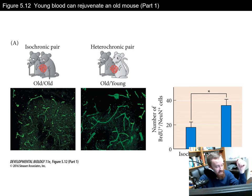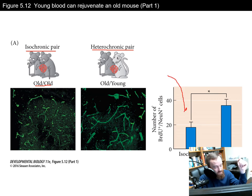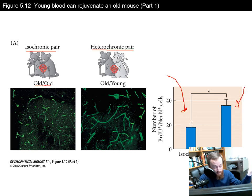In this experiment, they picked an isochronic pair of mice — two old mice — and linked their circulatory systems together. In their experimental group, they had a heterochronic pair: an old mouse and a young mouse. They found that when there was an old mouse paired with an old mouse, the number of neural progenitor cells was quite low, as expected with aging. However, when the old mouse was hooked up to the circulatory system of a young mouse, neural stem cells in the brain were reactivated and the old mouse was able to produce more neural progenitor cells.